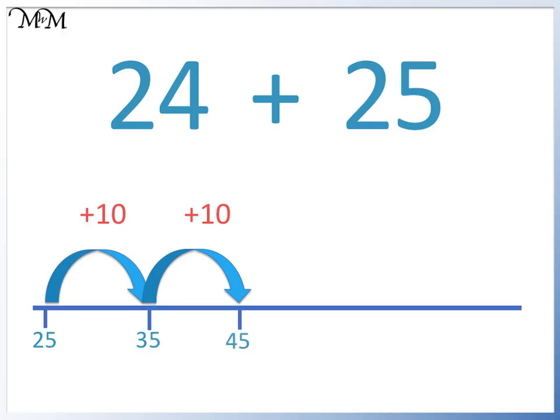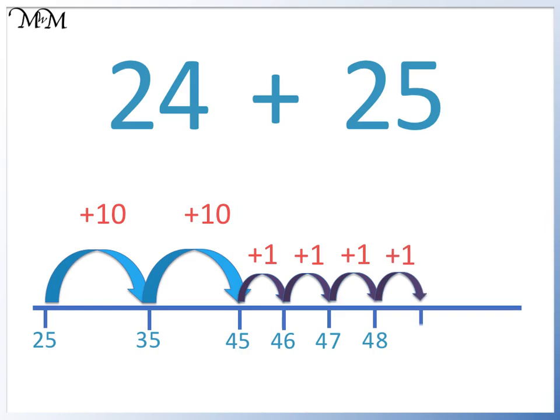We now add 4 jumps of 1. We go from 45 to 46, from 46 to 47, 47 to 48, and 48 to 49. 24 plus 25 equals 49. We made 2 jumps of 10 and 4 jumps of 1.